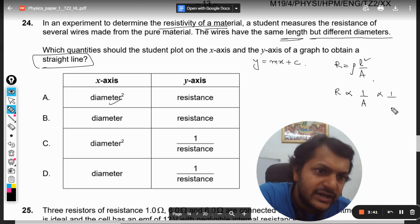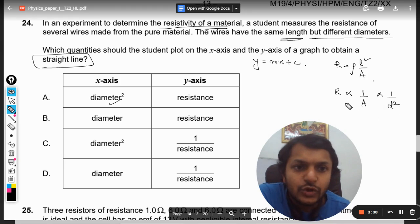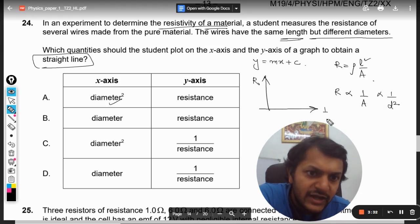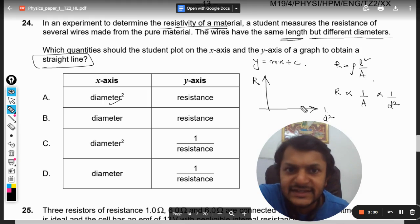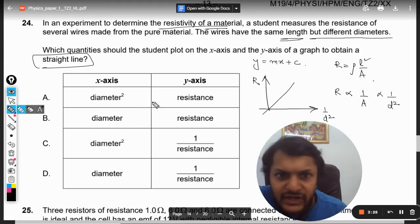If we have resistance on the y-axis and 1/d² on the x-axis, we will get a line. Let us now see the options to check if that option is available.